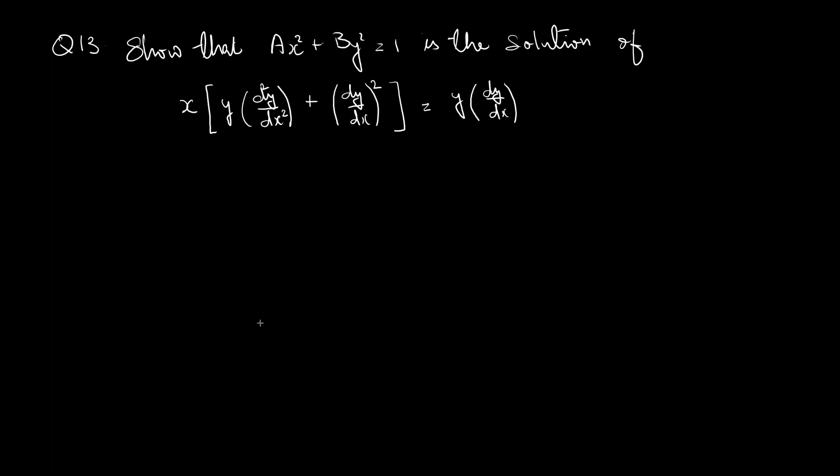Here the equation given is Ax² + By² = 1. This is equation 1. We have two arbitrary constants here and the differential equation will be of second order. We need to eliminate A and B, the arbitrary constants.